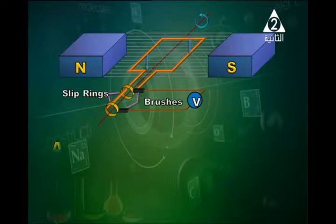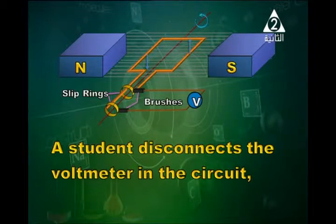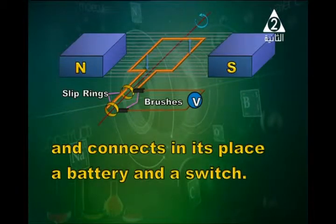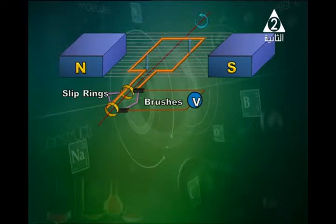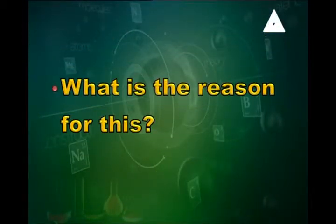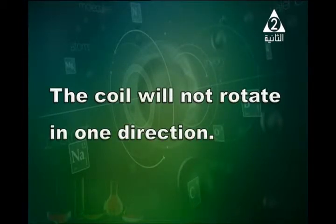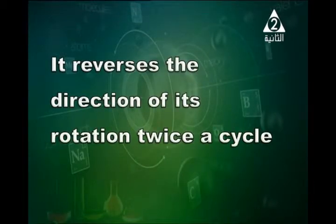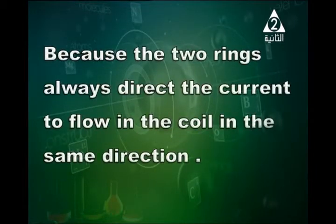A student removes the voltmeter from a circuit and replaces it with a battery and a switch, expecting to form a DC motor. But when he closes the switch, the coil does not rotate as it should. The reason is that the device has two rings, so the coil will not rotate in one direction — it reverses the direction of its rotation twice a cycle, because the two rings always direct the current to flow in the coil in the same direction.